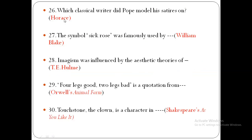Twenty-sixth question: which classical writer did Pope model his satires on? Horace. The symbol of the sick rose was famously used by which writer? William Blake has used it in his works. Imagism was influenced by the aesthetic theories of T.E. Hulme.